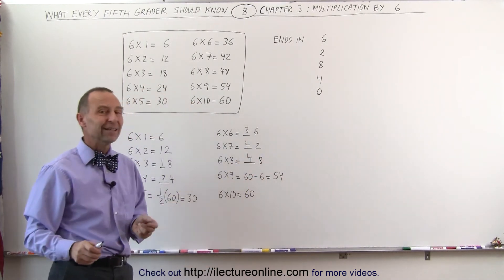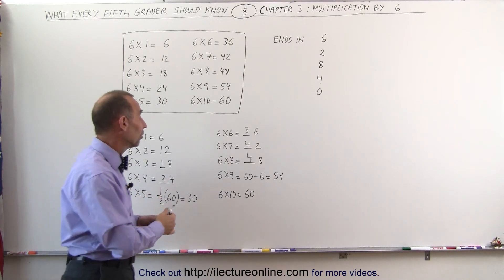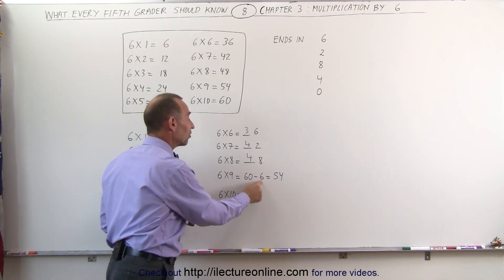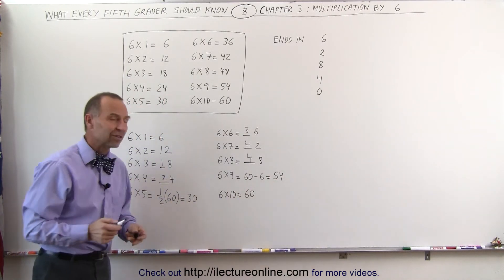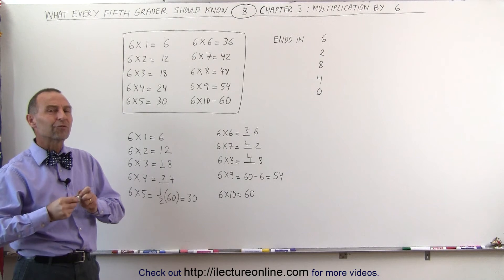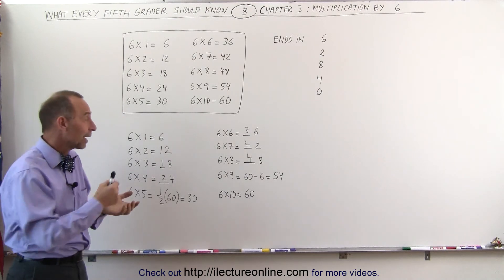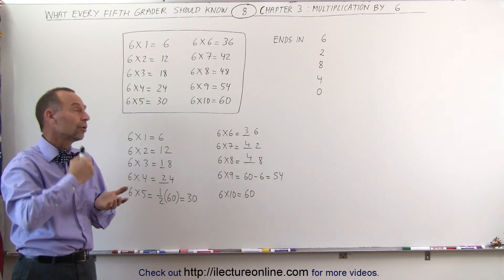6 times 9, I always like to go 6 times 10 minus 6, so 6 times 10 is 60, minus 6 gives me 54. And 6 times 10 is equal to 60. And that's how I'm able to figure out those numbers very quickly, by quickly remembering in the order and how they go.